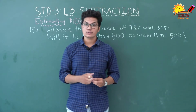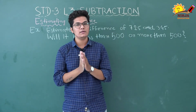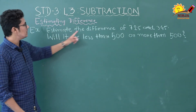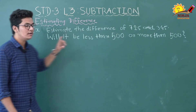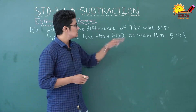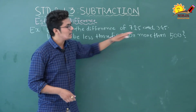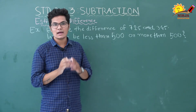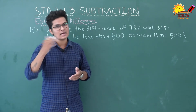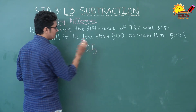Our next topic is estimating the difference. Just like we did estimation in addition, we will estimate the difference too — to find out approximately how much the difference could be. Let's see the first example: estimate the difference of 725 and 345. Will it be less than 500 or more than 500? We don't have to find the actual difference, just estimate using place values.